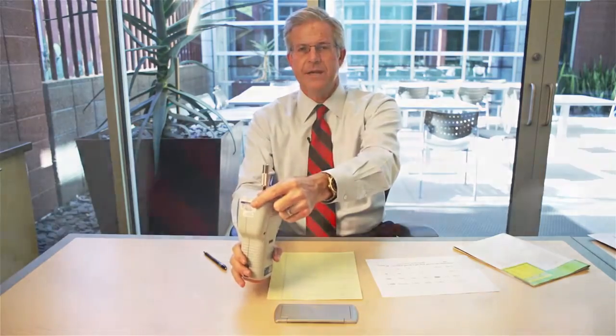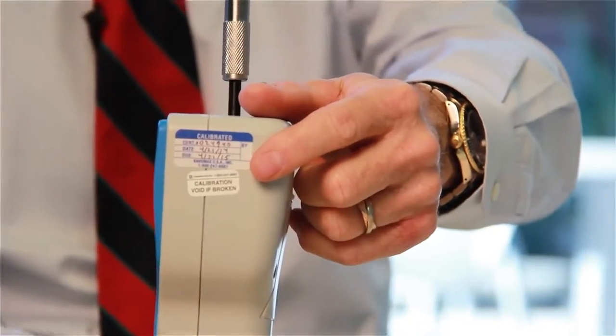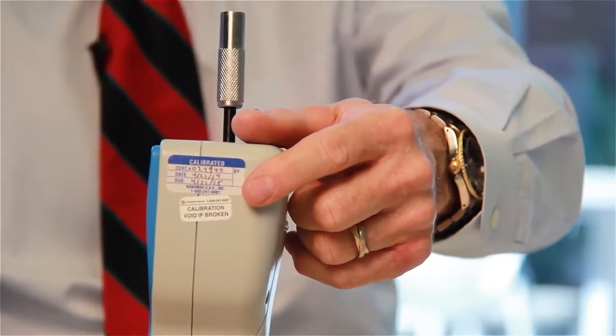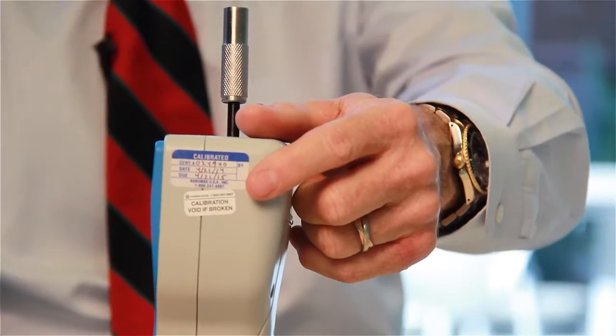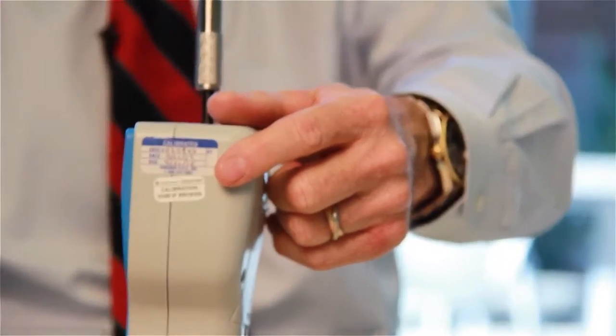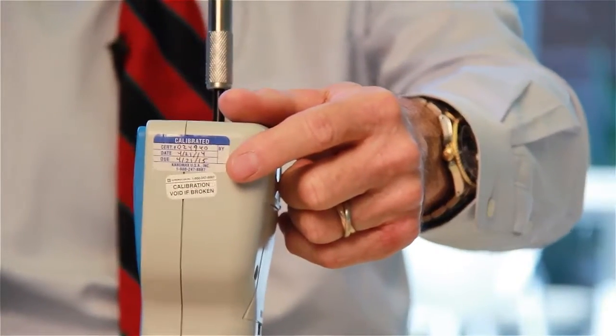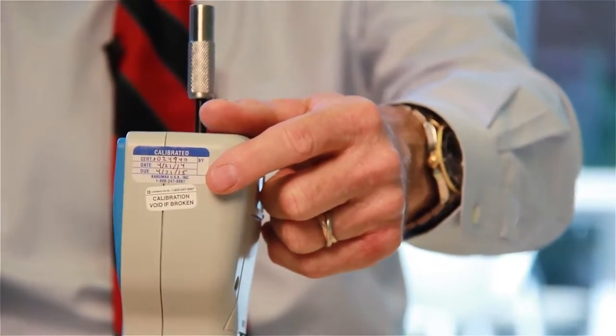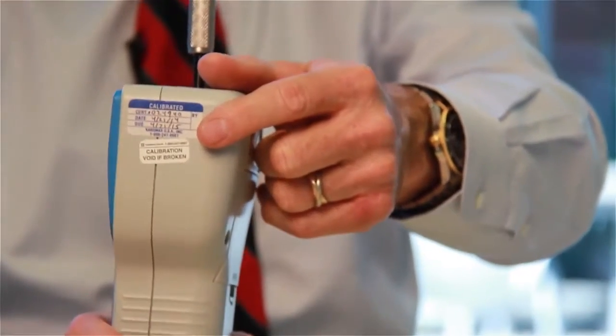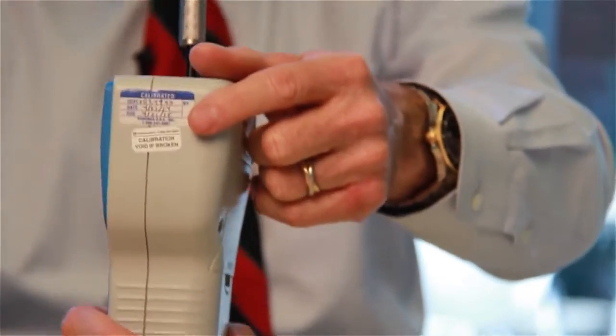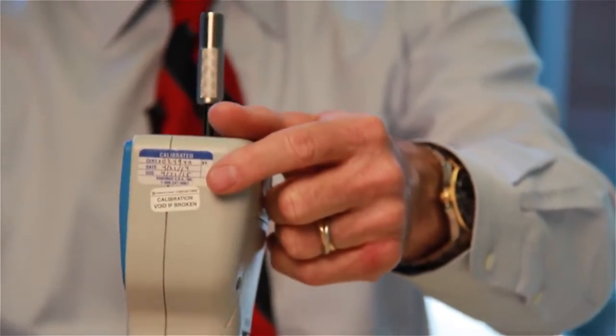Whenever you're using an air particle counter, it's very important that you examine the calibration date. As you can see, this unit was calibrated on 4-21 of this year. Calibrations for air particle counters are only good for 12 months. Because this is a very sensitive instrument, it needs to be recalibrated every 12 months.